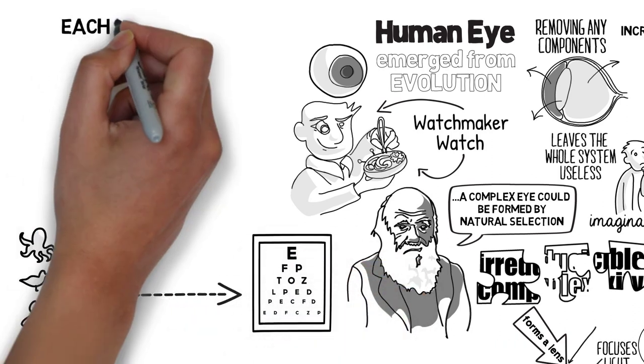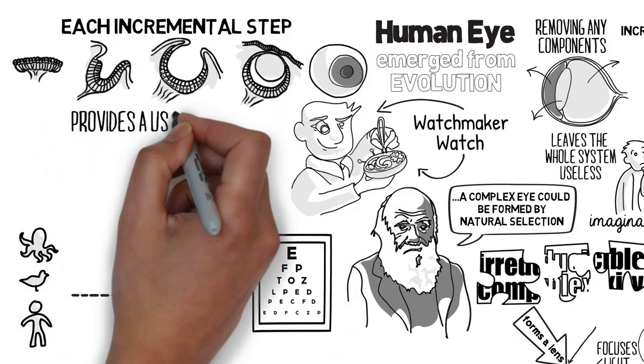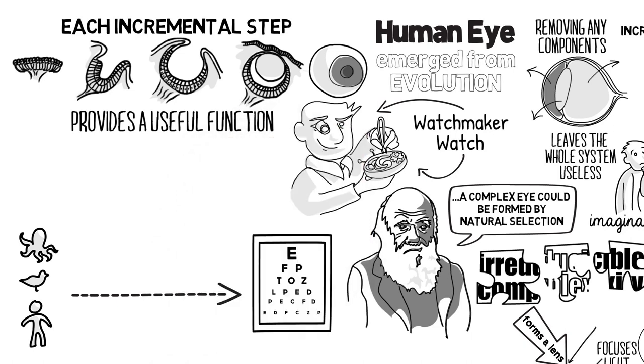There is evidence of each incremental step in the eye's evolution and we can see how each provides a useful function in its own right. Meaning it is indeed possible to reduce the complexity.